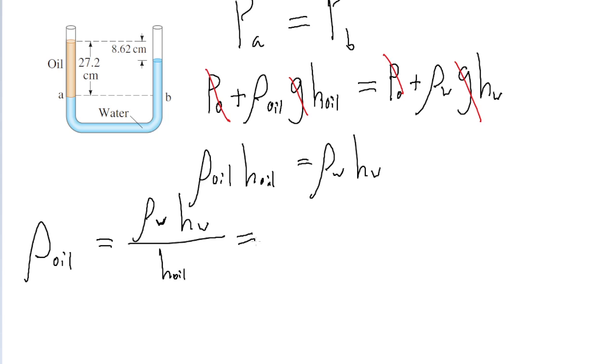Now let's just plug in the values we have. Remember that the density of water is equal to a thousand kilograms per cubic meter. Then we're multiplying this by the height difference of the water, which we can see from the diagram,